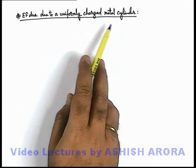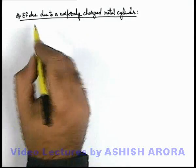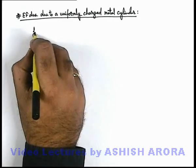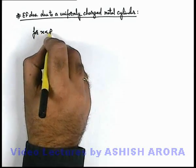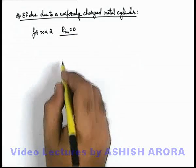In case of a metal cylinder we already are aware that for a position x less than R inside, electric field is always equal to zero because it is a metal cylinder.